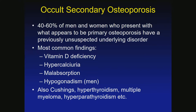Forty to 60 percent of men and women who present with what appears to be primary osteoporosis have an underlying diagnosis — so roughly half the time you or the primary care physician will find a secondary cause. The most common by far is vitamin D deficiency. We only get vitamin D from the sun or if we eat it, and we tell people not to go out in the sun, and sunscreen with SPF 50 blocks our ability to make vitamin D.